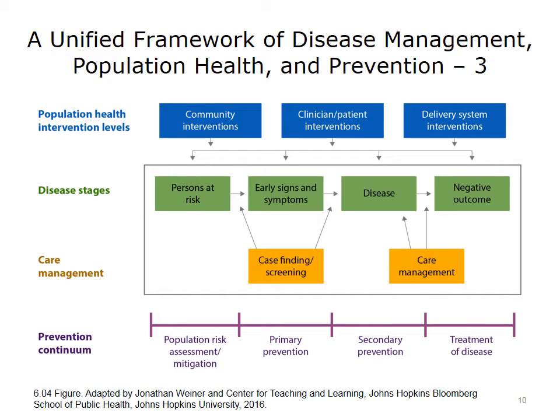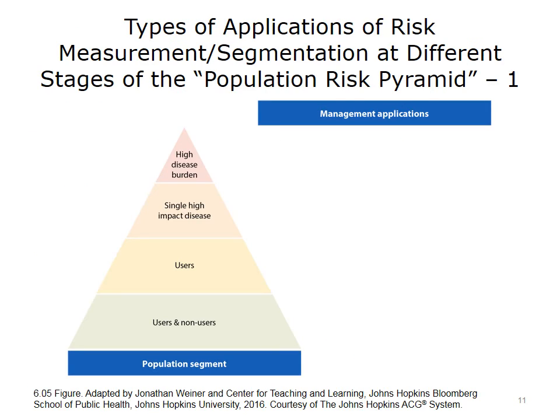We share this framework as a way of opening the black box a bit, to give you a sense for all the ways that predictive modeling and risk measurement may be useful within the population health context. The next series of slides represents the various types of care management, clinical management, and health care management activities that require risk segmentation, case-finding, or predictive modeling. Again, these are all interrelated terms.